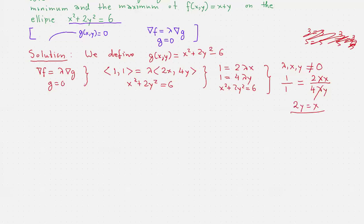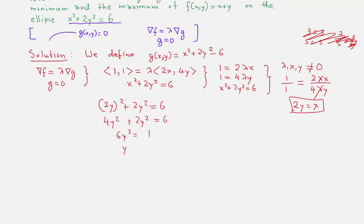And that would give us 2y all squared plus 2y squared equals 6, which means that 4y squared plus 2y squared equals 6, which means that 6y squared equals 6, so y squared equals 1, which means that y equals plus or minus 1.